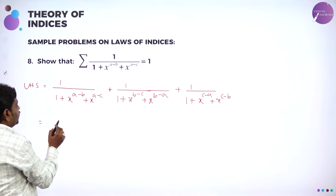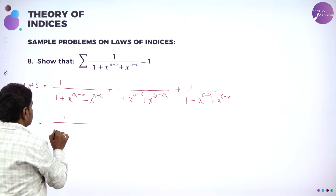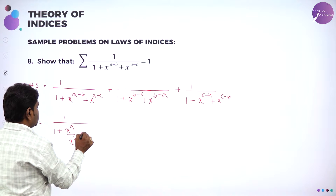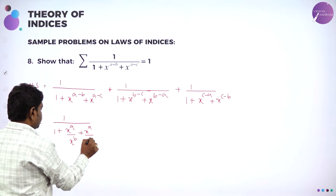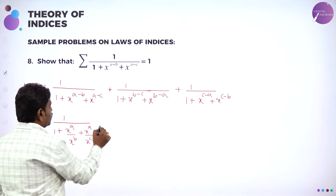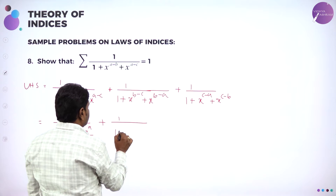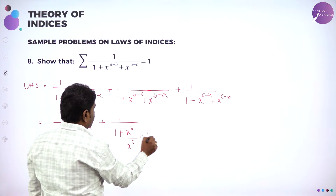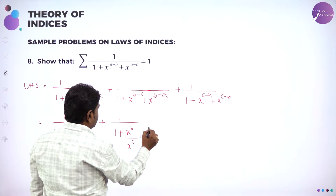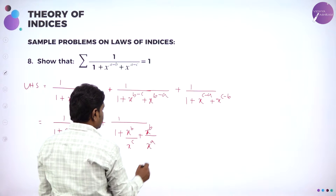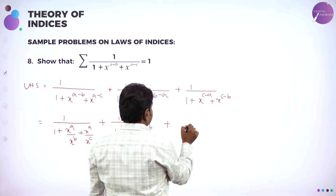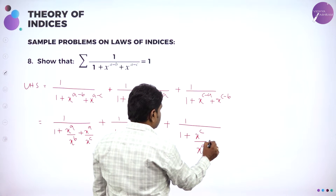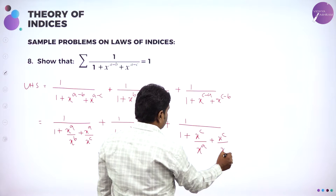Now simplify. Using law of indices, this can be written as 1 by (1 + x^a/x^b + x^a/x^c), then 1 by (1 + x^b/x^c + x^b/x^a), further 1 by (1 + x^c/x^a + x^c/x^b).